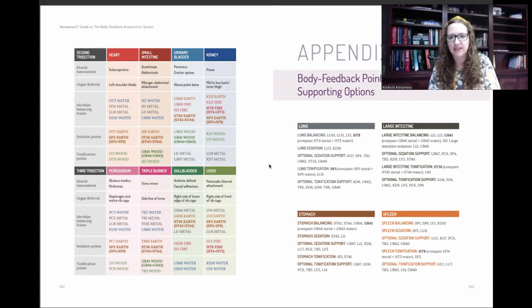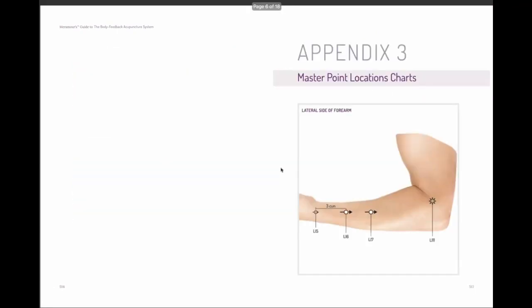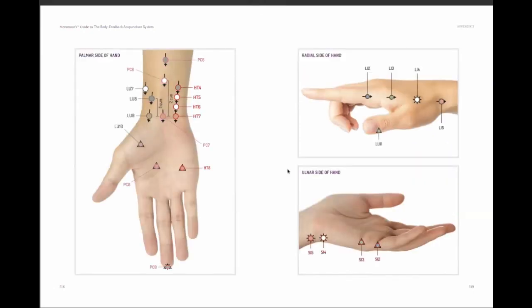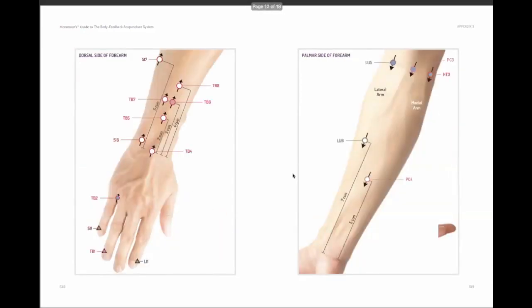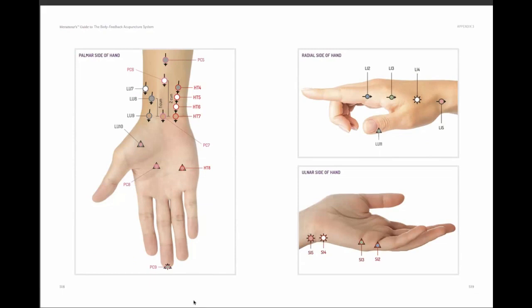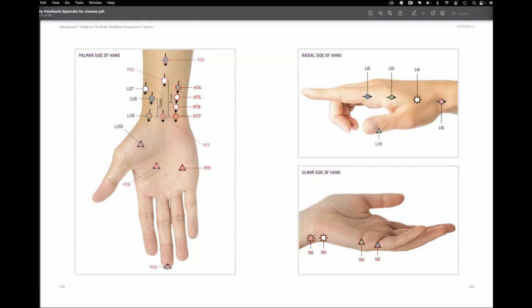Appendix three — when I started teaching this in person, I realized a lot of people's point selections were very different from the Body Feedback point selections. So I included master charts here so you know where to find these points. If you're not familiar with a point, I have it detailed — how to needle it and where to find it. Now let's get into the slideshow.